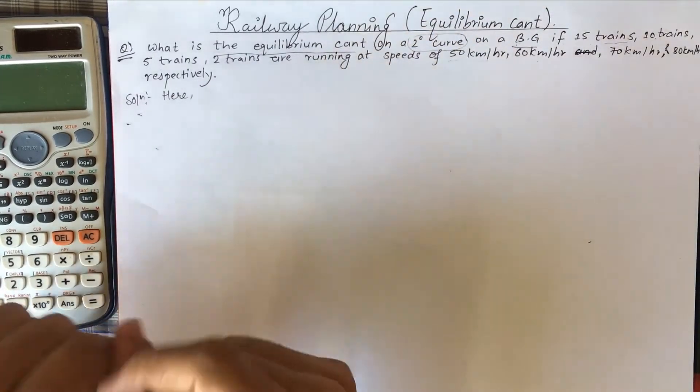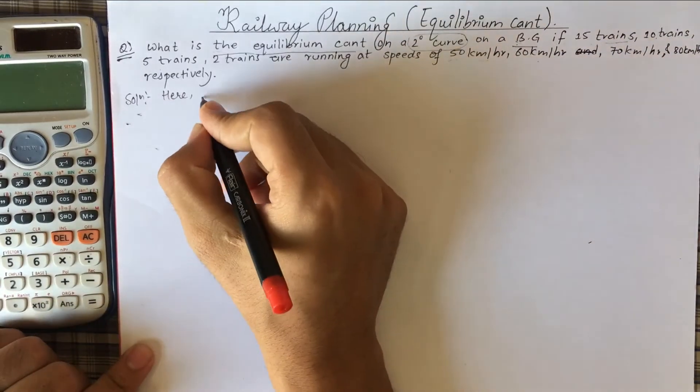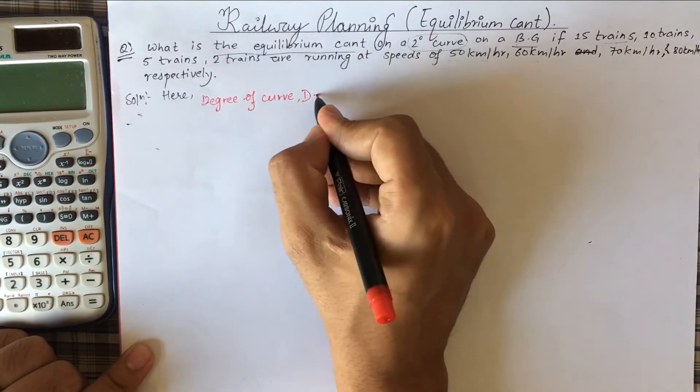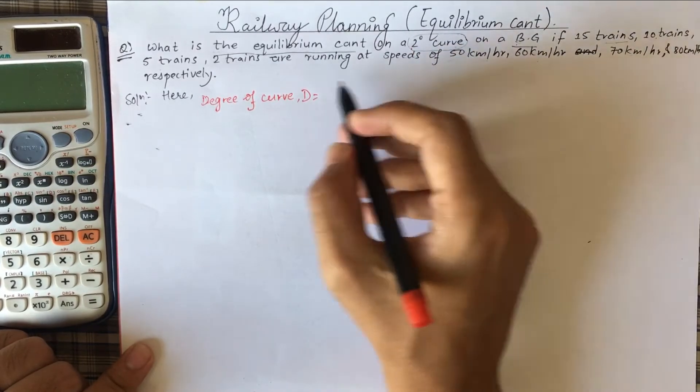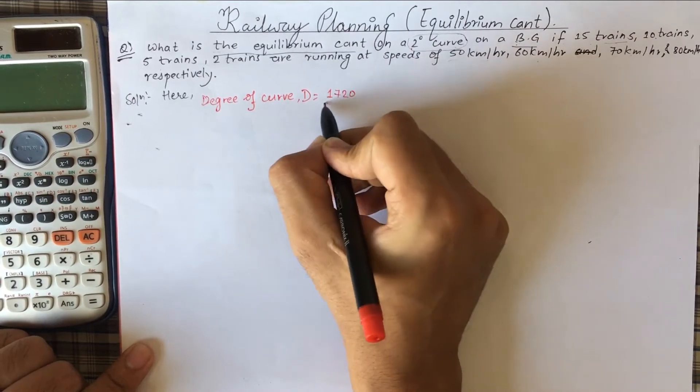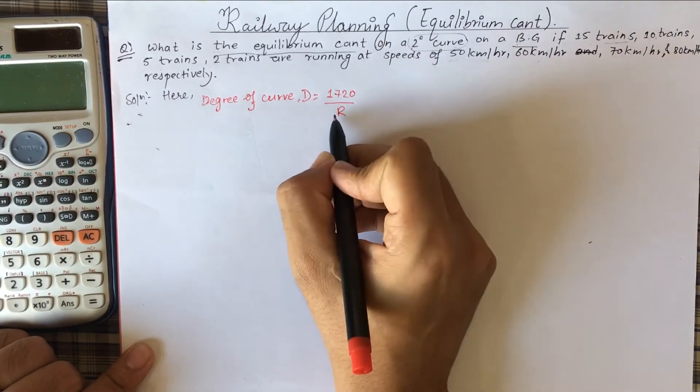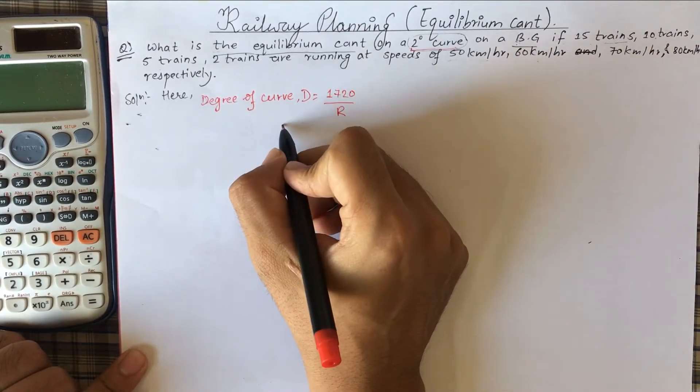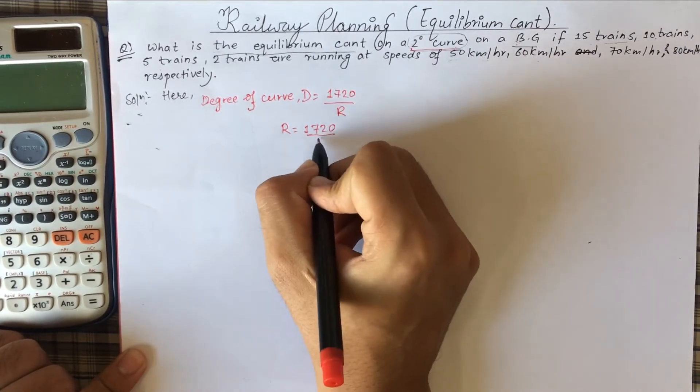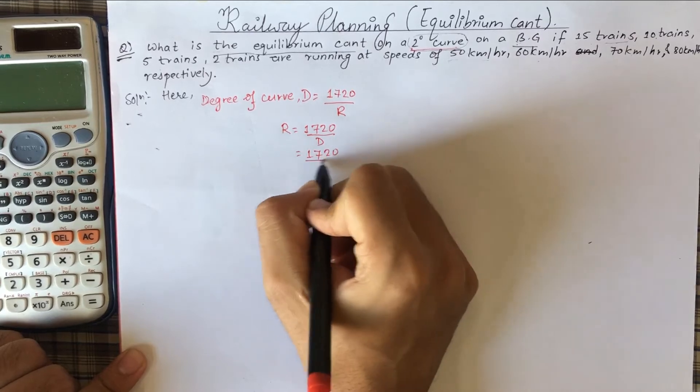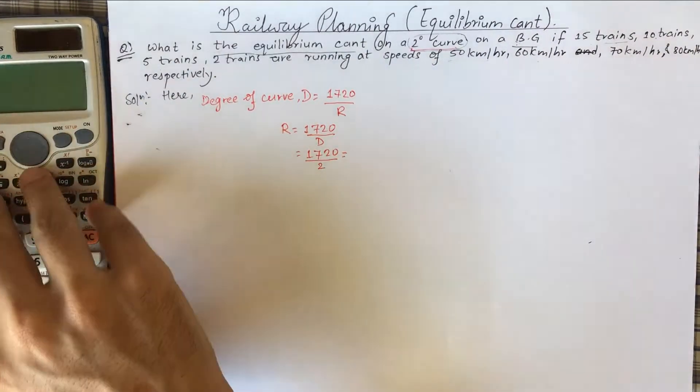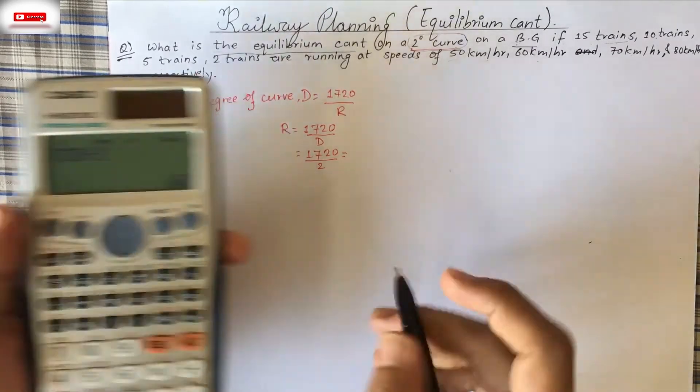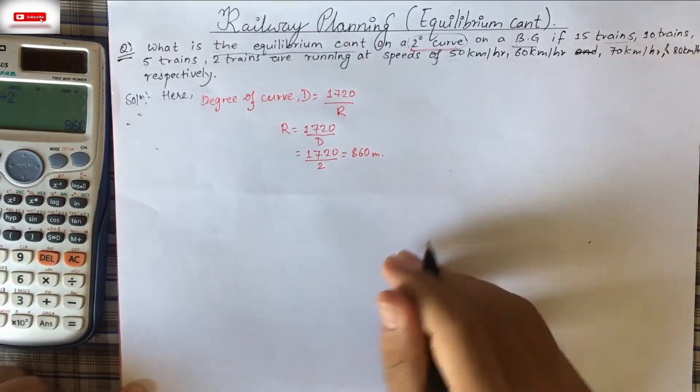Solution here. Degree of curve, capital D. Here it clearly saying that two degree curve. But we have formula, capital D is equal to 720 divided by capital R. And D is given, two degree curve. Degree of curve is two degree. So that we can write R is equal to 720 by D. So let's substitute the value 720 divided by D, 720 divided 2 gives 860. We find R.